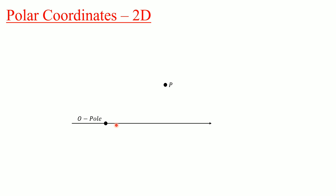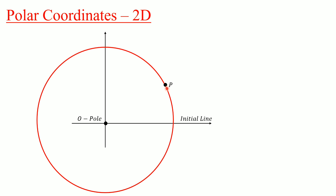A horizontal line passing through the pole is called the initial line, or positive x-axis, and the line perpendicular to it is the positive y-axis. In polar coordinates we draw a circle whose center is the pole and which passes through point P. This circle has its center at the pole and point P lies on it.